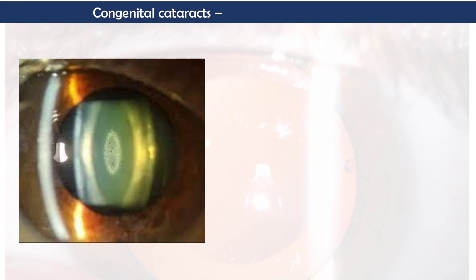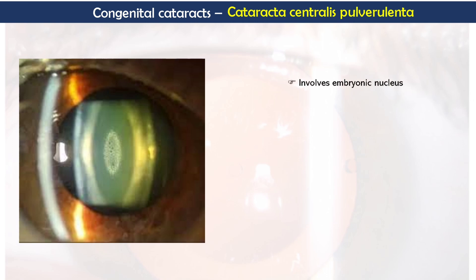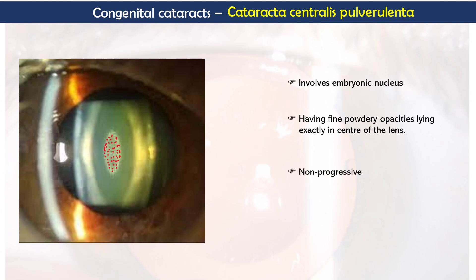Next under congenital cataract is cataracta centralis pulverulenta. This is an embryonic nucleus cataract having fine powdery opacities lying exactly in the center of the lens. Usually most of these are non-progressive and do not affect vision.